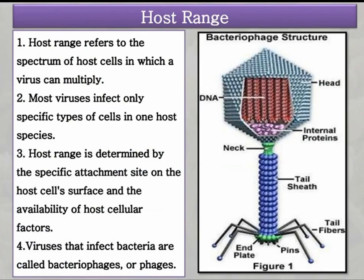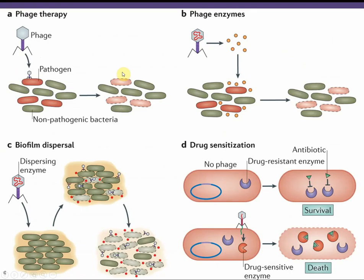Host range is the spectrum of host cells or types of cells a virus can infect. Most viruses will only infect specific types of cells in one host or species, and rarely can they cross host species. For example, dogs don't get measles like we do and don't need to be vaccinated against it. This host specificity is determined by specific attachment sites on the host cell surface, where viruses must chemically interact with specific receptor sites. Viruses that infect bacteria are specifically referred to as bacteriophages, or just phage.